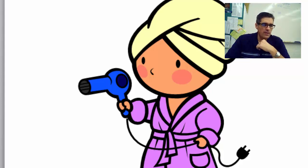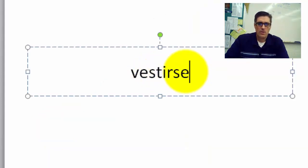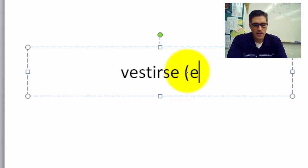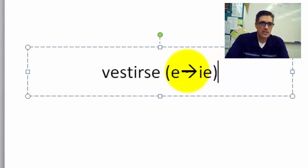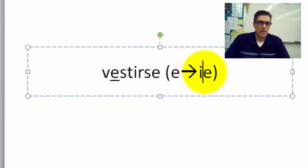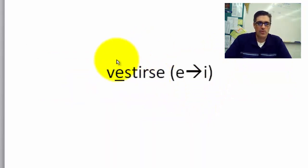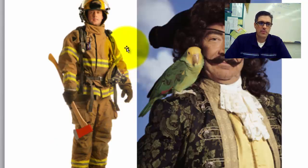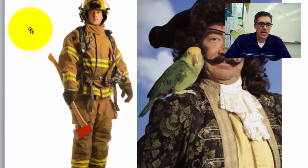To finish off: Vestirse, which is an E to I stem changer — that E is going to change to I. So: yo me visto, tú te vistes, él se viste. Mi amigo se viste de bombero para el Halloween. Yo me he visto de pirata.